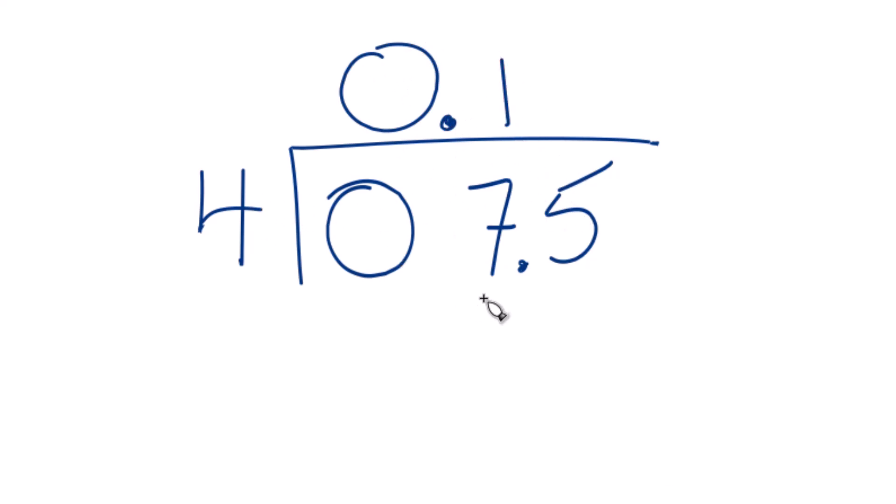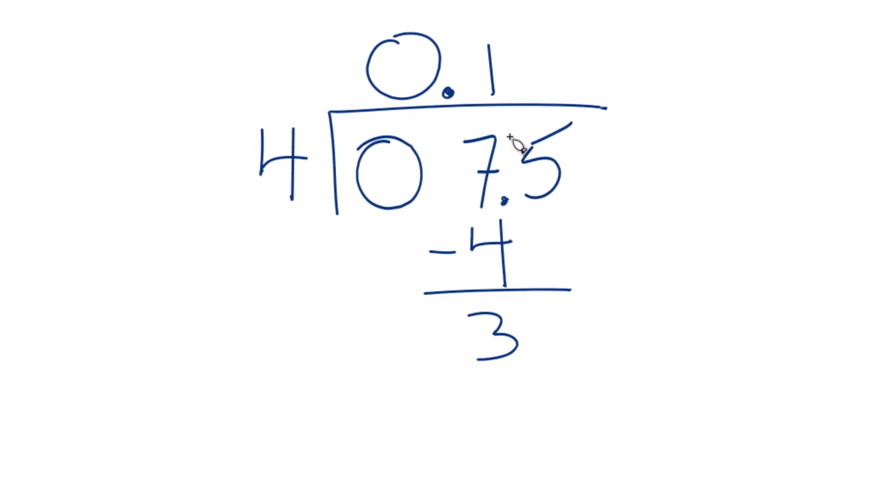So 1 times 4, that's 4. If we subtract, we get 3. And let's move over 1 here. Bring this 5 down.